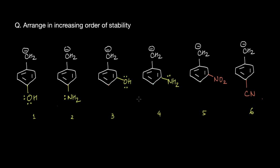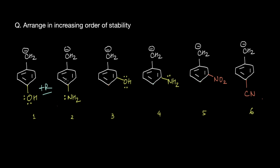Let's analyze what each group does to the stability of each anion. The OH group has a lone pair of electrons, and whenever a lone pair is attached to a double bond, we can have resonance. So this OH group is going to push electrons into the system by resonance — this is what we call a +R group. Similarly, NH₂ also has a lone pair attached to a double bond, so it can also push its lone pair into the benzene ring, acting as a +R group.